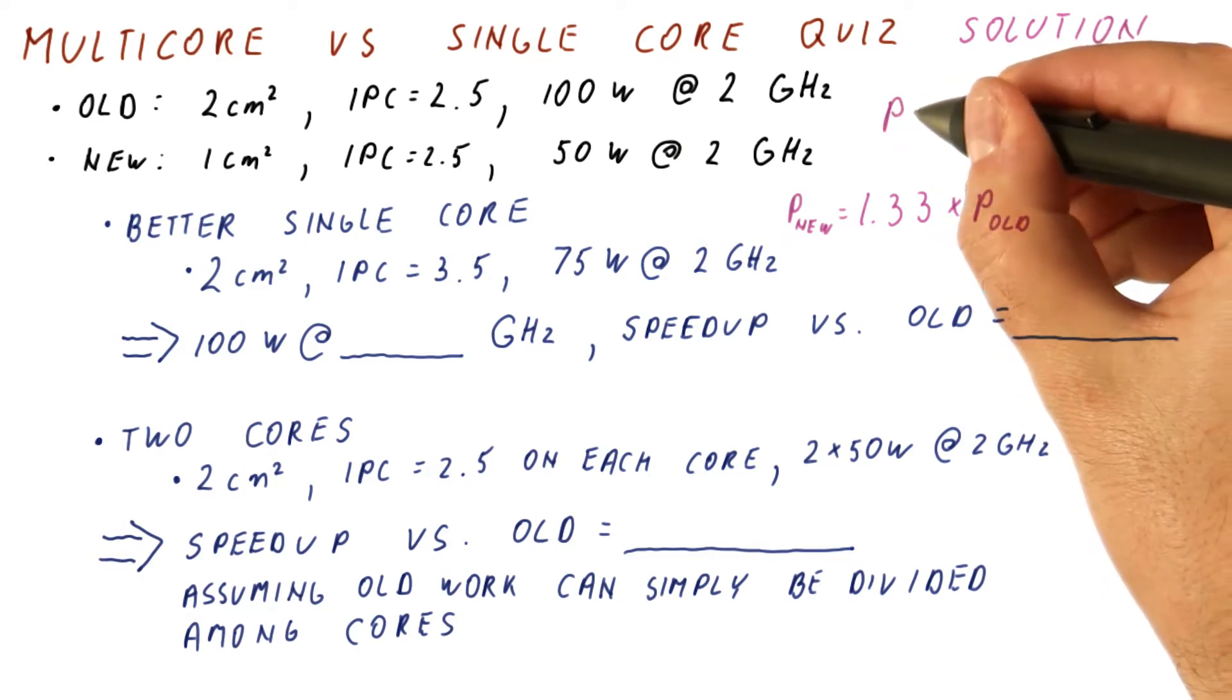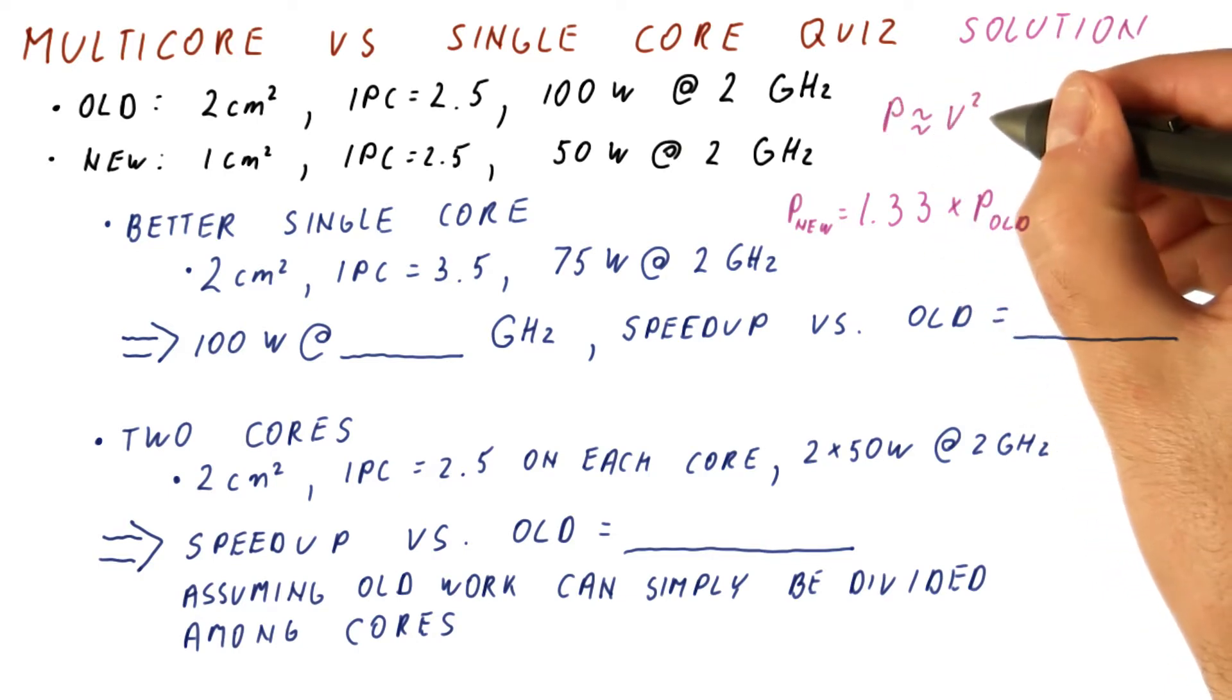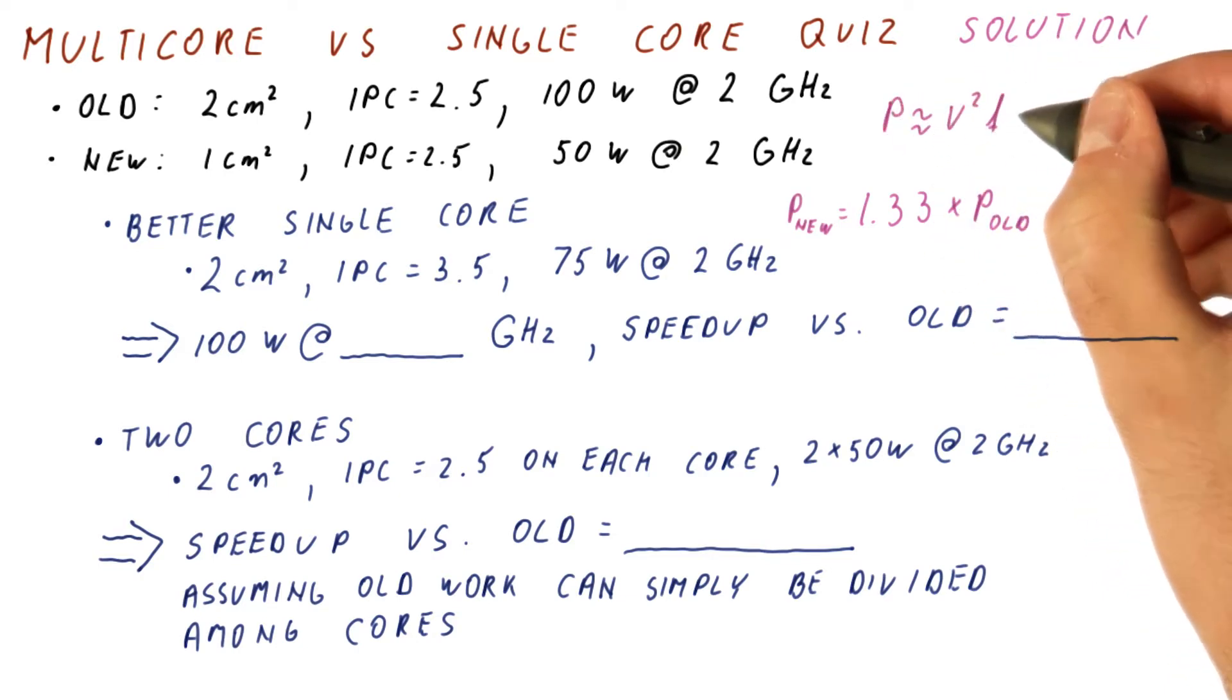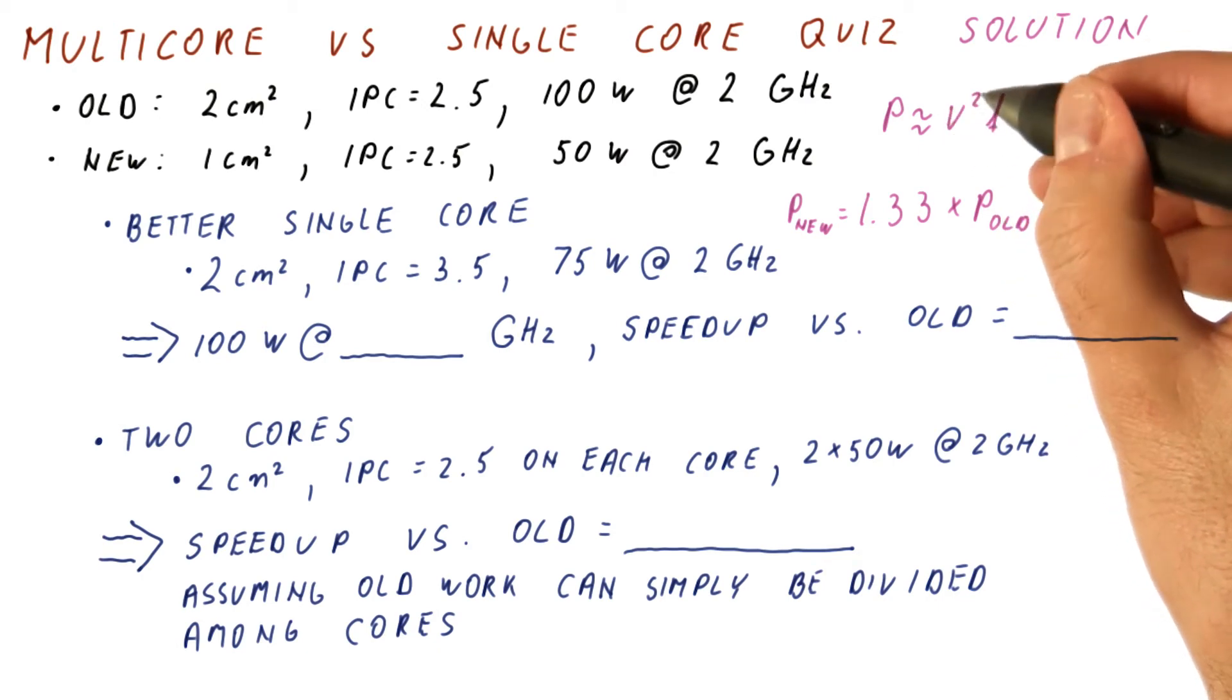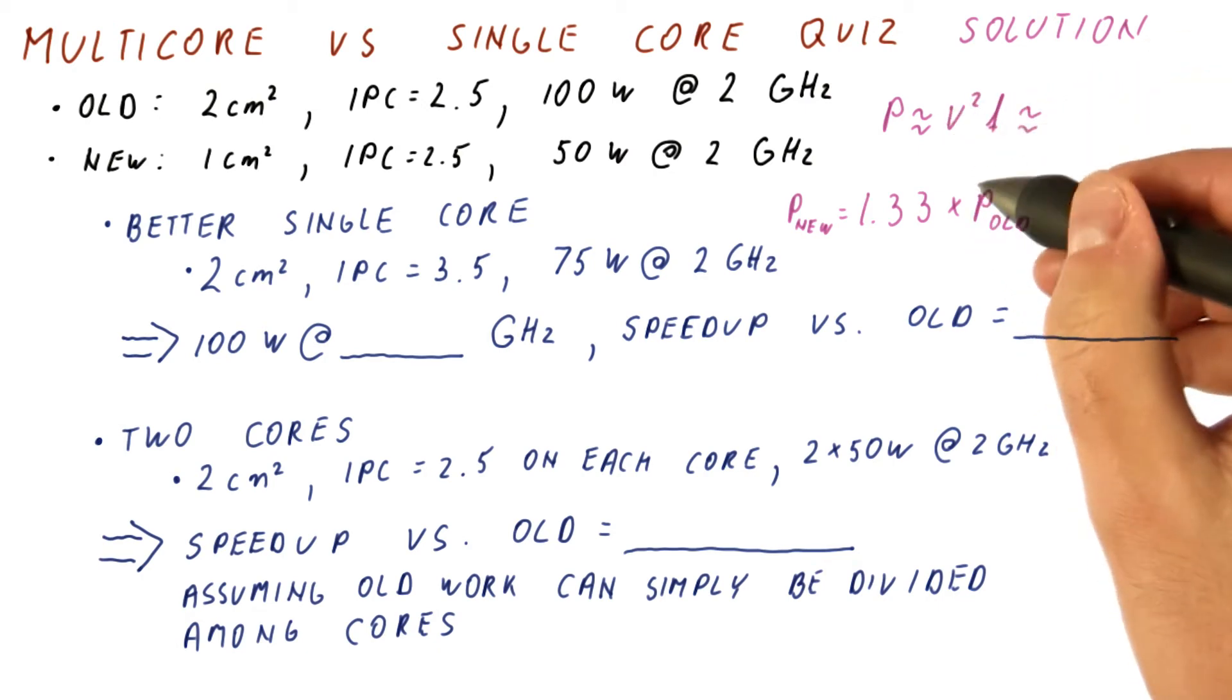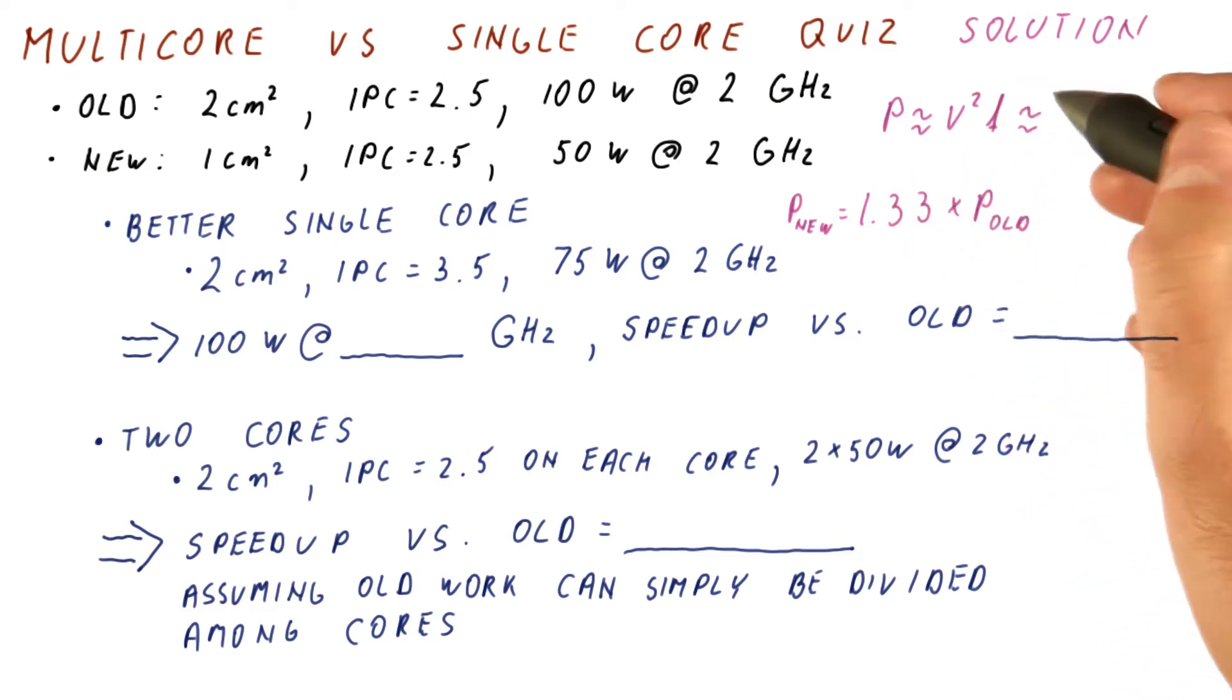Remember that the dynamic power is proportional to voltage squared times the frequency itself, and that we have to increase the voltage in proportion to frequency. So if we are spending power to increase the frequency, we have to proportionally get both the voltage and the frequency up. And that means that we will be spending power in proportion to the cube of the frequency.